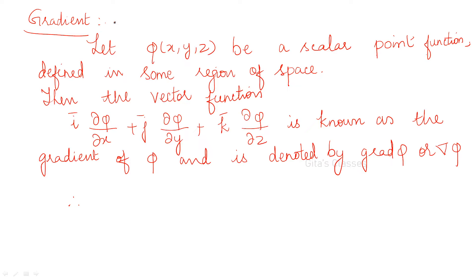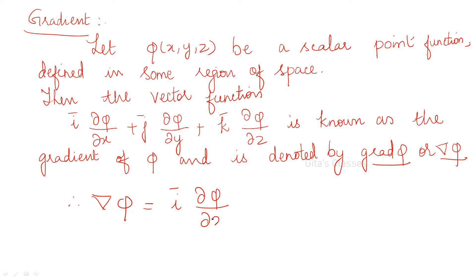First let us apply del on a scalar point function. If del is applied on a scalar point function, it is called gradient. So if phi(x, y, z) is a scalar point function and del is applied, you get i·(∂φ/∂x) + j·(∂φ/∂y) + k·(∂φ/∂z), which is known as the gradient of phi, denoted by grad phi or del phi. Please remember this throughout this unit.